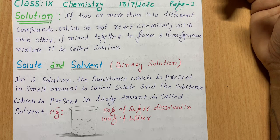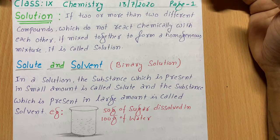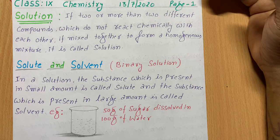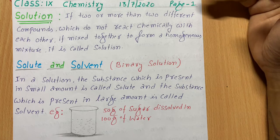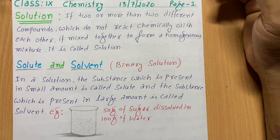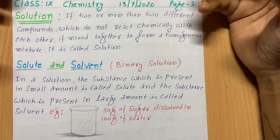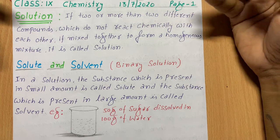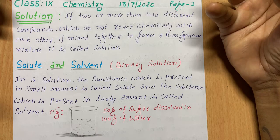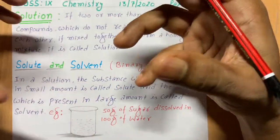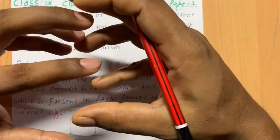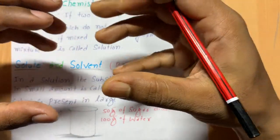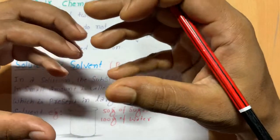The very first topic is solution. In chemistry, a solution has a specific definition. Suppose you have two substances — which can be solid, liquid, or gas — and if you combine those substances without any chemical reaction and mix them properly, you get a homogeneous mixture.